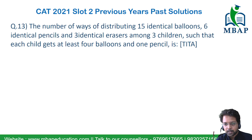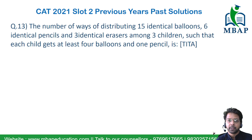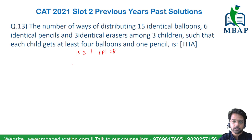The 3 children are not identical — they cannot be identical. So the items being distributed — balloons, pencils, and erasers — are identical in number. The count is 15 balloons, 6 pencils, and 3 erasers, distributed among 3 children.